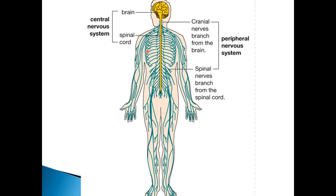So we have a sensory pathway which relays information towards the brain. The brain processes that information and then we have a motor pathway where information is sent away from the brain towards the relevant muscles, organs, and glands that need to be activated.